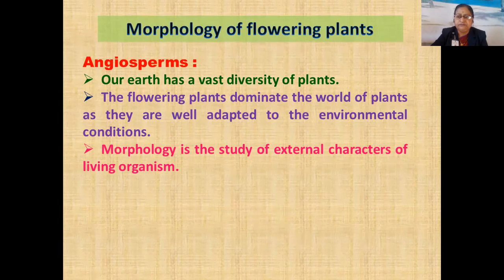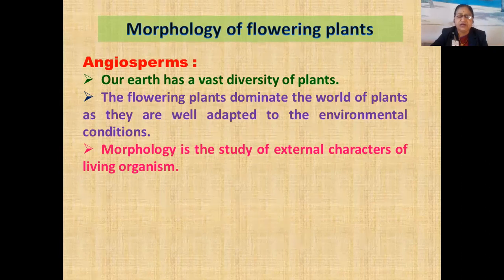You have already studied Classification of Kingdom Plants. Kingdom Plantae is divided into two groups: Cryptogams and Phanerogams. Cryptogams are non-flowering plants that do not produce seeds; these are spore-producing plants. Phanerogams are flowering and seed-producing plants. Cryptogams are divided into three divisions: Thallophyta, Bryophyta, and Pteridophyta. While Phanerogams are divided into two divisions: Gymnosperms and Angiosperms.